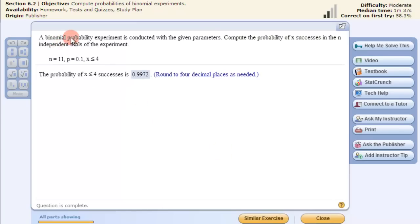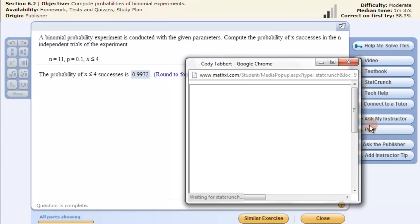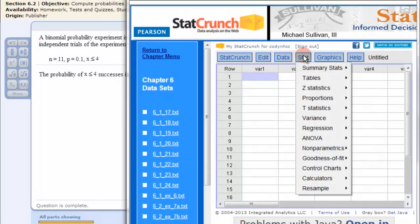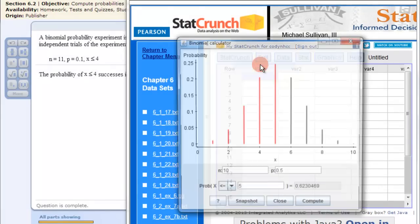So in this problem it's a binomial probability experiment and we want to find the probability of x less than or equal to 4. So again we open up StatCrunch. Same thing stat calculators binomial.